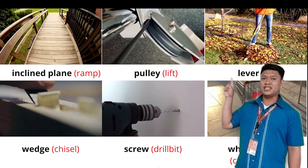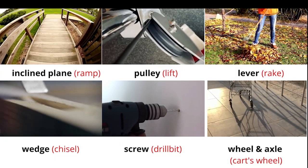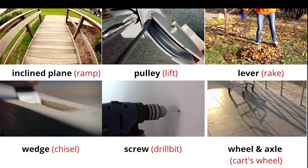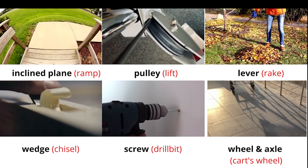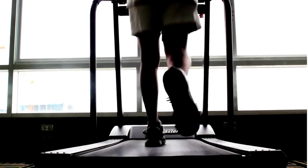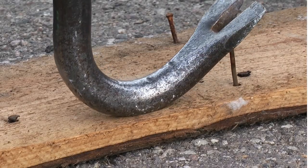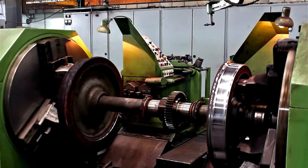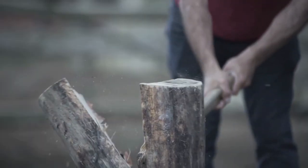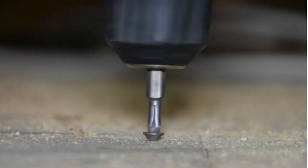Here are examples of simple machines in our daily lives. We are surrounded by simple machines everywhere. They make our work easier, faster, and better. Use appropriate simple machines for each task to ensure safety and lengthen the span of your tool's use.